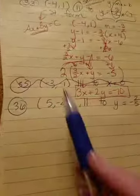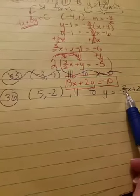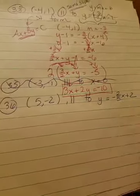Next one, 36, they gave you the point (5, -2), parallel to y equals negative 2 fifths x plus 2, and they wanted this one in slope intercept. Okay, so again, all we need from this equation that they gave you is the slope.